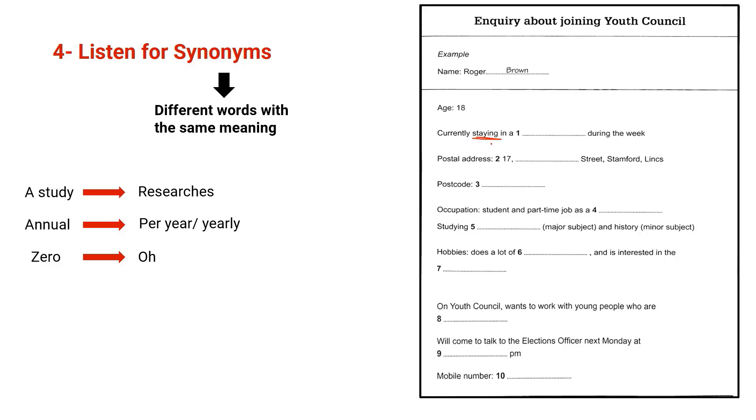Another example: the word occupation, student and part-time job. Occupation might be heard as work or job, or a question like what do you do? Hobbies, you might hear something like what do you like doing or what do you enjoy doing, or the word interests, and so on. So this is the idea of synonyms. And as I told you, when you practice more, you will learn more and more synonyms.